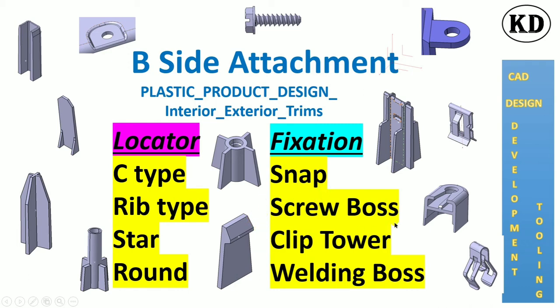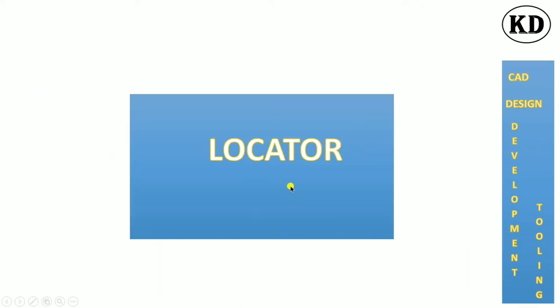There will be a number of types of B side attachments, including locator, fixation, ribs, cleaves, screws, nuts, bolts, and inserts.